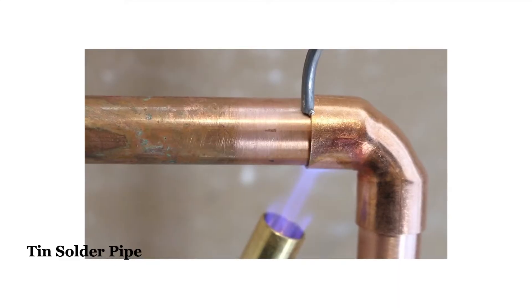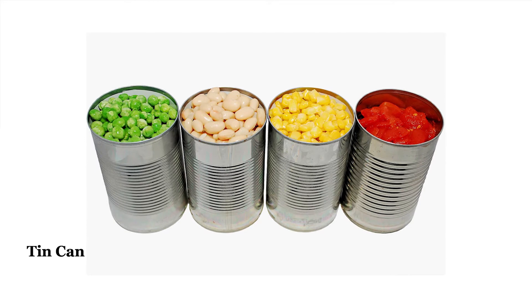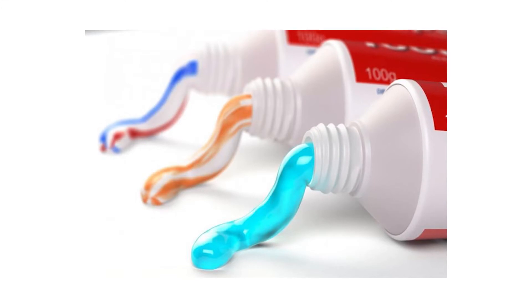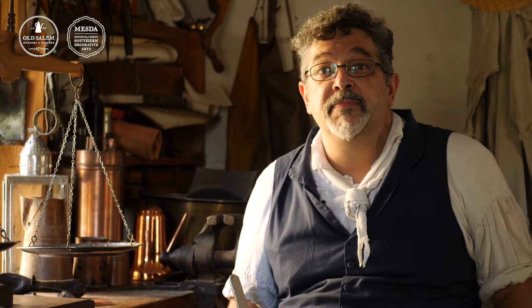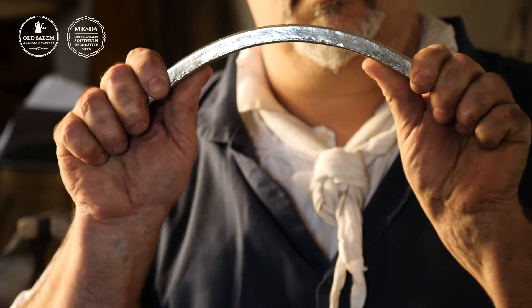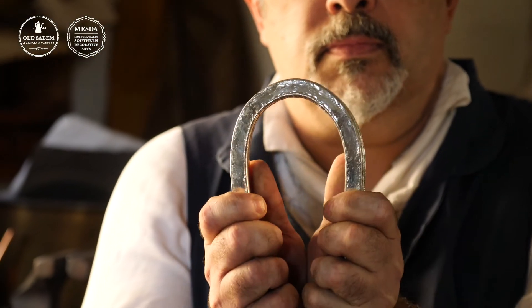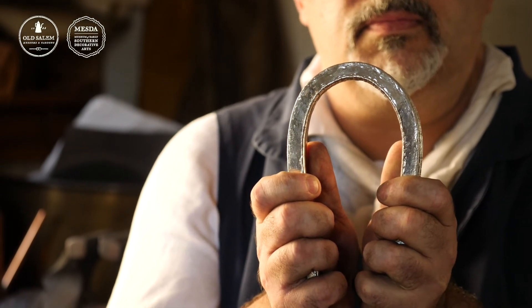The most common use for tin today is joining electrical or water pipes. If you've ever picked up a can of food and seen the shiny exterior, that's a thin coating of tin applied to it. You might have also found tin in your mouth — if you've ever used stannous fluoride in toothpaste, that's a derivative of tin. You can see how malleable the tin bar is by bending it. Listen to the tin cry as the crystalline structure is reformed within it.